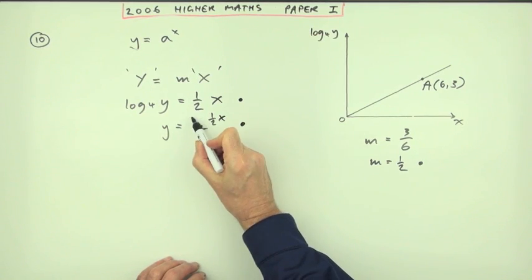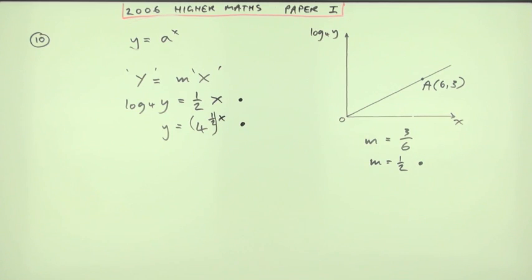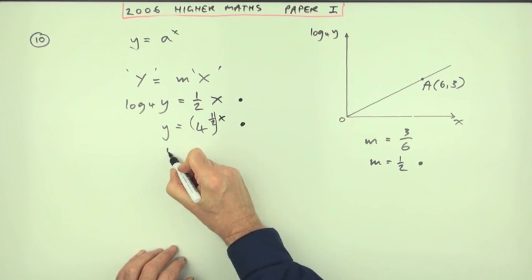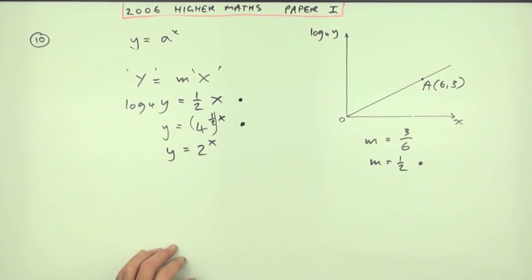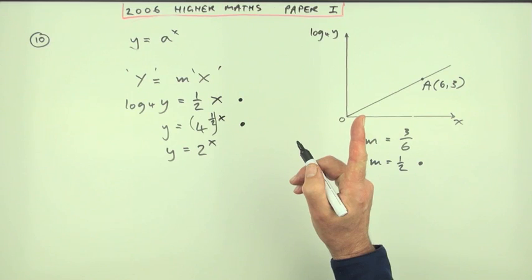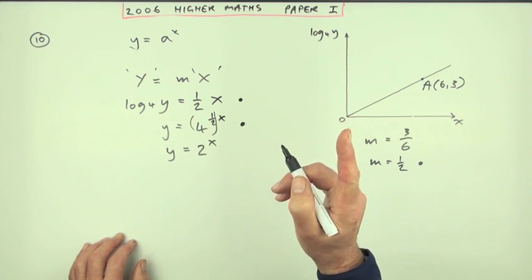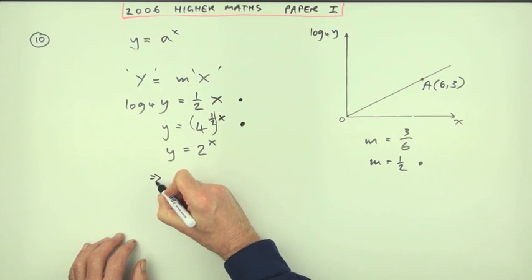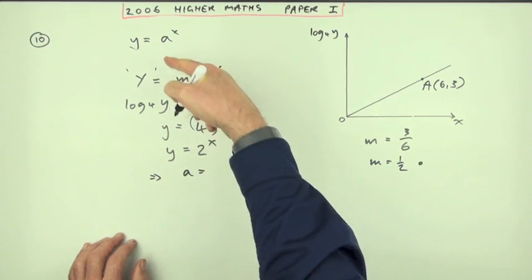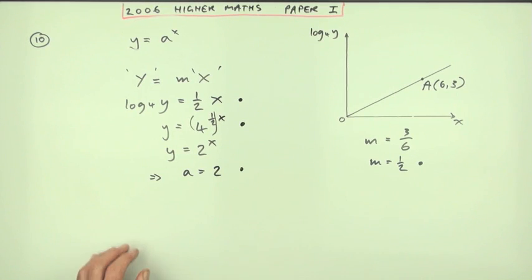Now you've got to sort this out. If I bracket that, then I've got 4 to the power a half, which means you've got square root of 4, so it's 2 to the power x. However, the equation did say what's the value of a, so I have to finish off by saying which means that a equals 2. And there's your fourth mark.